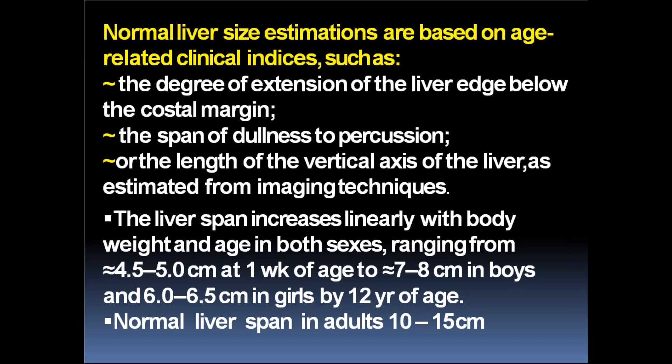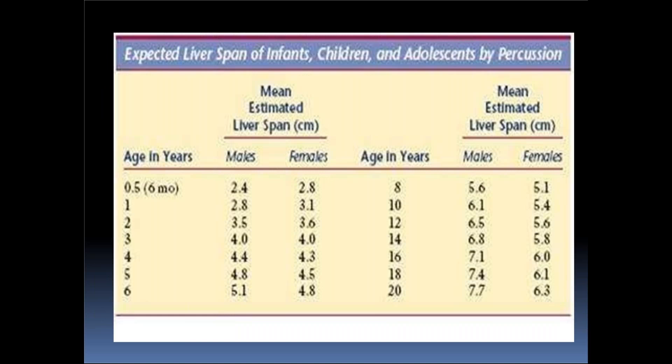Normal liver span increases linearly with body weight and age, ranging from 4.5 to 5 centimetres at one week of age to approximately 7 to 8 centimetres in boys and 6 to 6.5 centimetres in girls by 12 years of age. Normal adult liver span is 10 to 15 centimetres. By 6 months in males it is approximately 2.4 centimetres; by 12 years it is 6.5 centimetres in males and 5.6 centimetres in females.